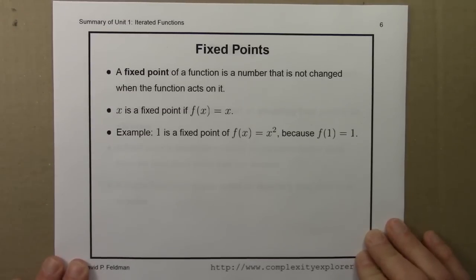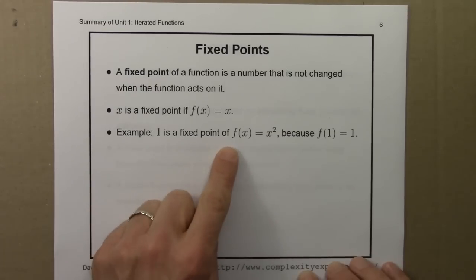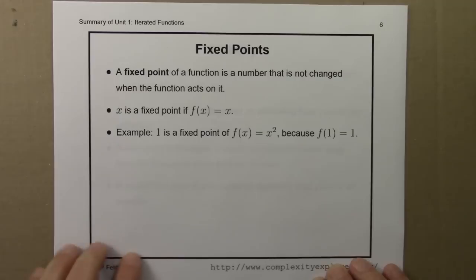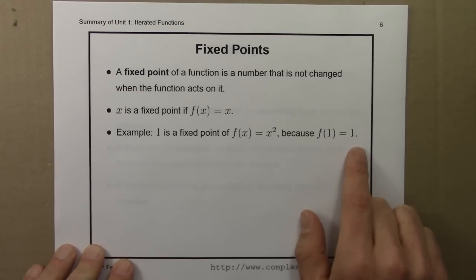A fixed point of a function is a number that is not changed when the function acts on it. For example, 1 is a fixed point of the function f of x equals x squared because f of 1 is 1. 1 squared is 1.